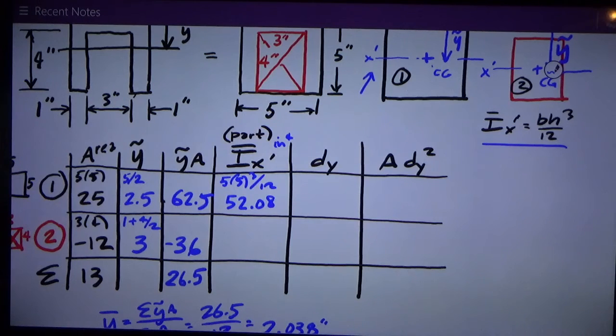For the red negative rectangle, it is base three times four cubed divided by twelve. This is a negative area so it has a negative moment of inertia, and that number works out to be exactly sixteen. I sum that column and I get thirty-six point oh eight.